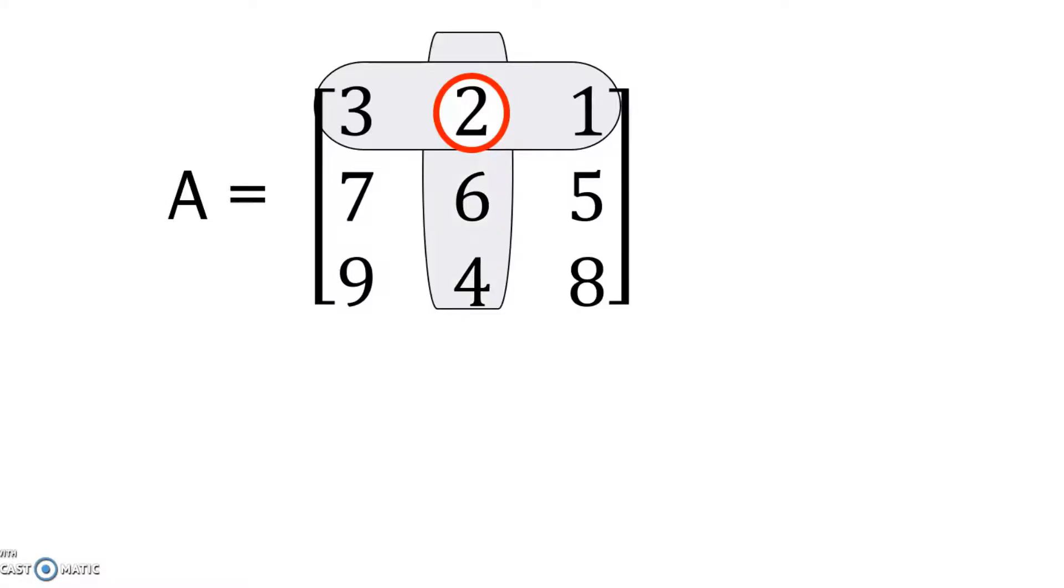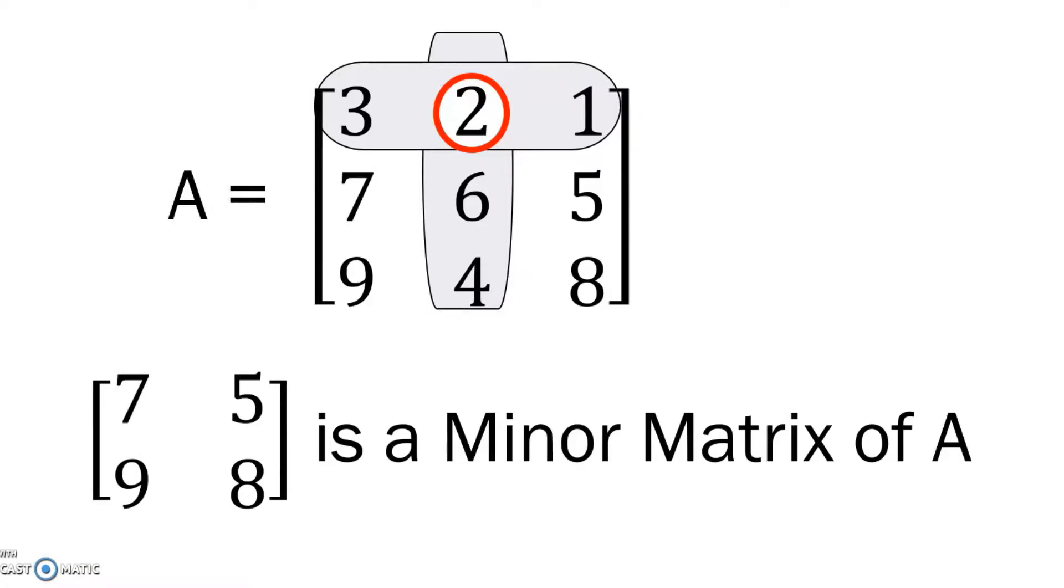So now we are left with a submatrix 7, 9, 5 and 8. So this submatrix is called a minor matrix of A.